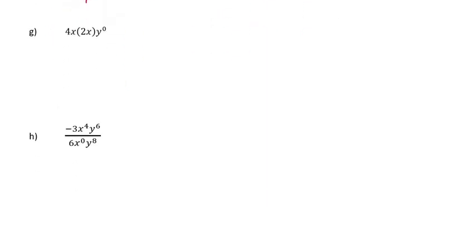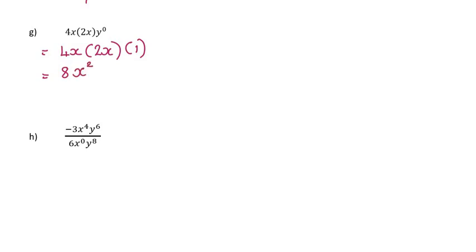On to question g. Here I have 4x — nothing to do with the power of 0. I also have times 2x, which has nothing to do with the power of 0. And then y to the power of 0 is 1. So only what's attached to the 0 disappears to 1. I actually get 4 times 2 times 1, which is 8. Remember, I multiply my numbers together and then my letters together — x times x is x squared.